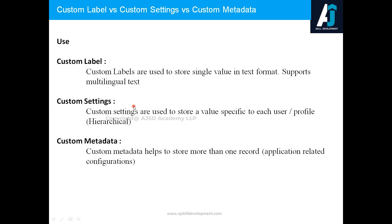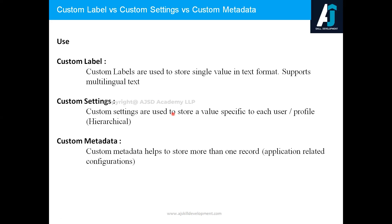Next comes custom settings. Custom settings are generally used to store a single value, but that single value can be stored in the context of a profile or user — that's what hierarchical custom settings are. We'll mostly use hierarchical custom settings if a value changes from profile to profile. For example, a sales rep gets 20% commission, a marketing person gets 10% — custom settings is the right option for this.